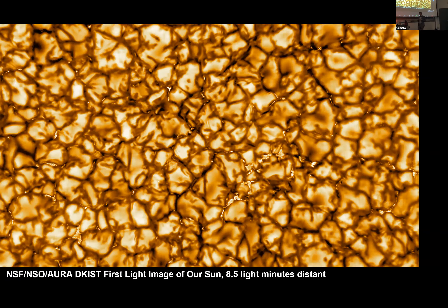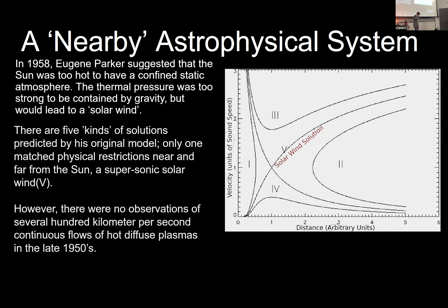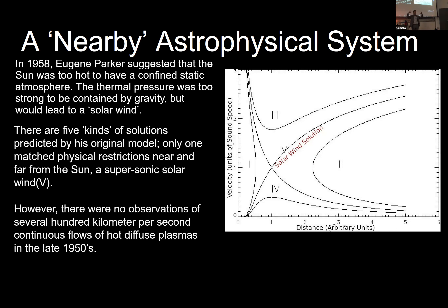We thankfully happen to live around our sun — a mere eight-and-a-half light minutes away. This is an object we can actually send a spacecraft to and locally measure the conditions of the actual plasma. We can't actually land on the sun, but the sun thankfully extends part of itself out to us in something known as the solar wind. This expansion of the sun's atmosphere was originally predicted by Eugene Parker back in the late 1950s.